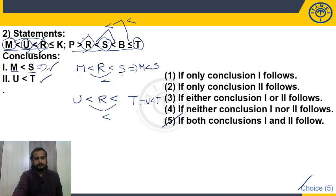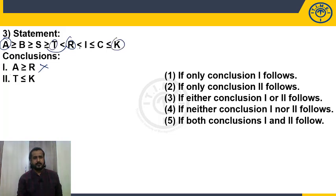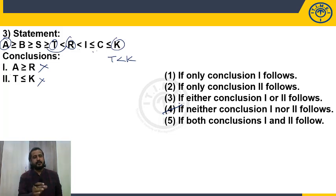Question 3 is a single statement — solve mentally. First conclusion: A and R — there is an opposite sign between them, so does not follow. Second conclusion: T ≤ K. T is here and K is here — operators are less than, less than, less than, less than, less than or equal to — leading to T < K. But the conclusion given is T ≤ K, which is weaker. Since we have a definite less than, we do not choose less than or equal to. Neither conclusion 1 nor 2 follows — choice 4. Each question should take only 15 to 20 seconds.